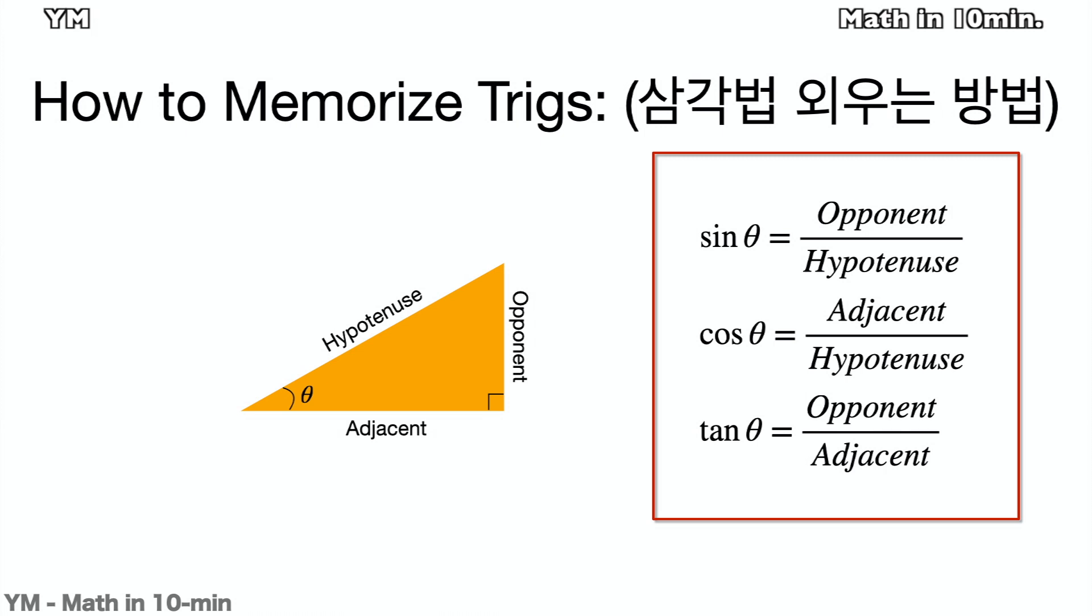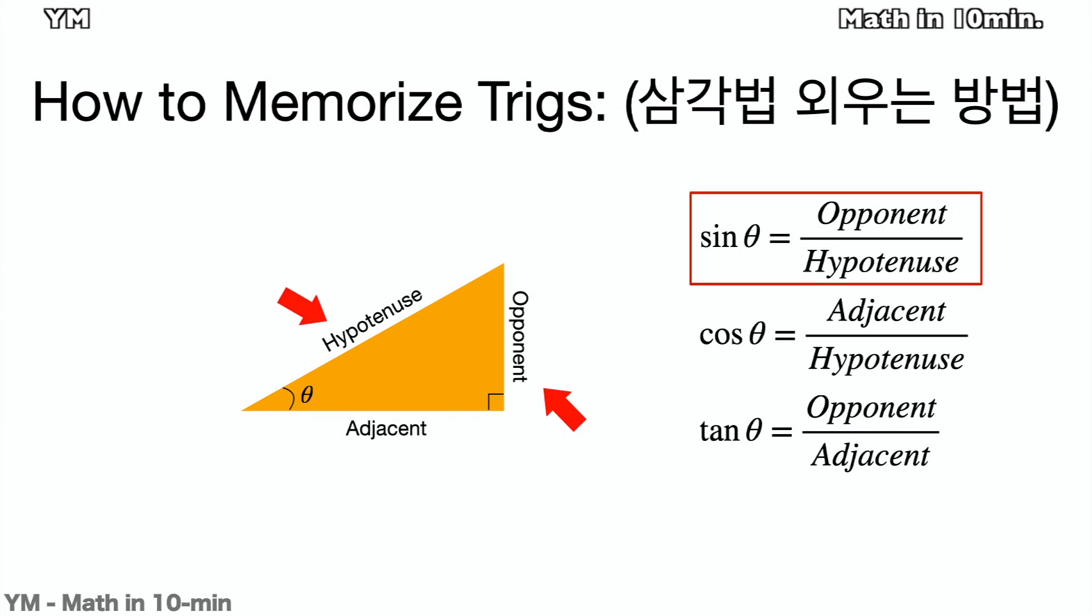Then sine, cosine, and tangent are defined based on those three sides and the angle theta between the hypotenuse and adjacent. Sine theta is equal to opponent over hypotenuse. Cosine theta is equal to adjacent over hypotenuse. And tangent theta is equal to opponent over adjacent.